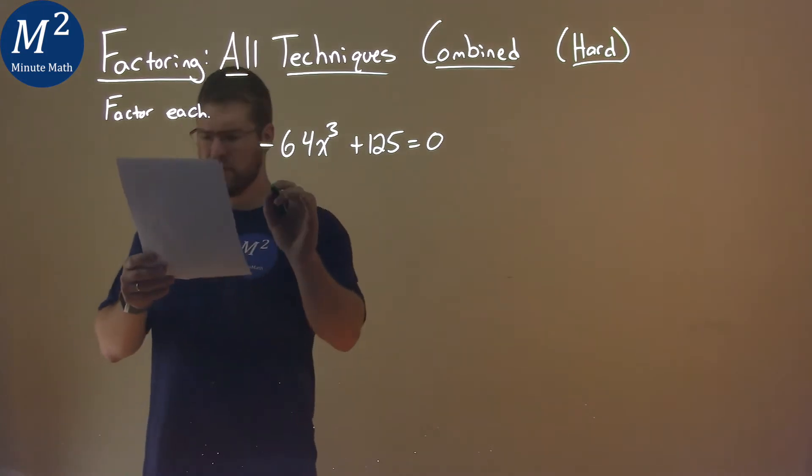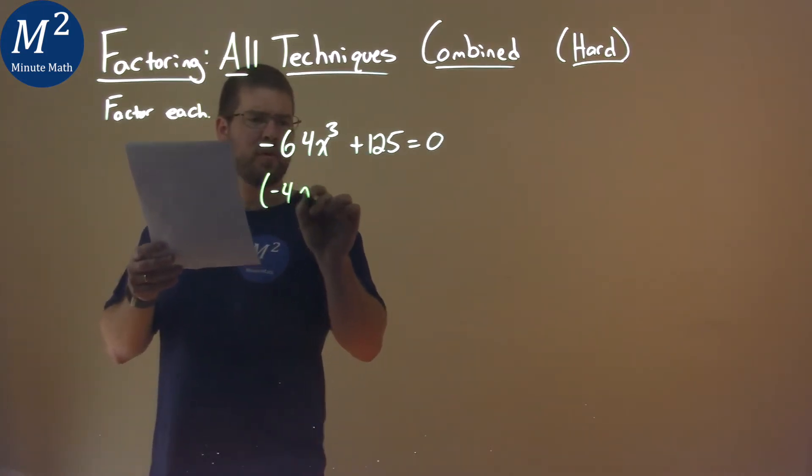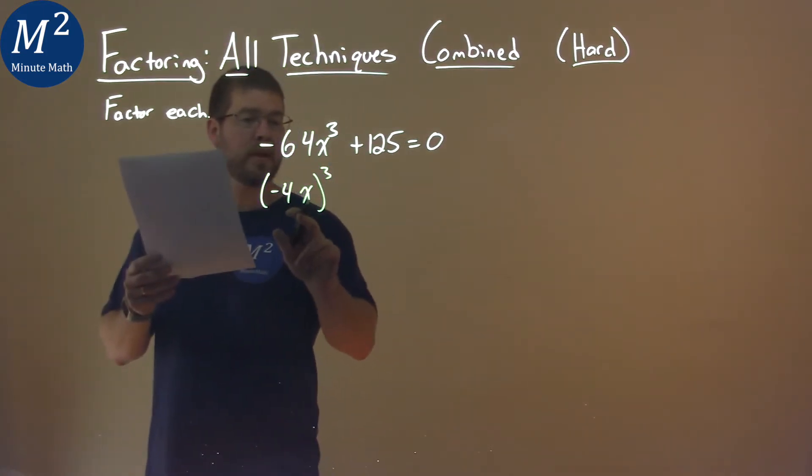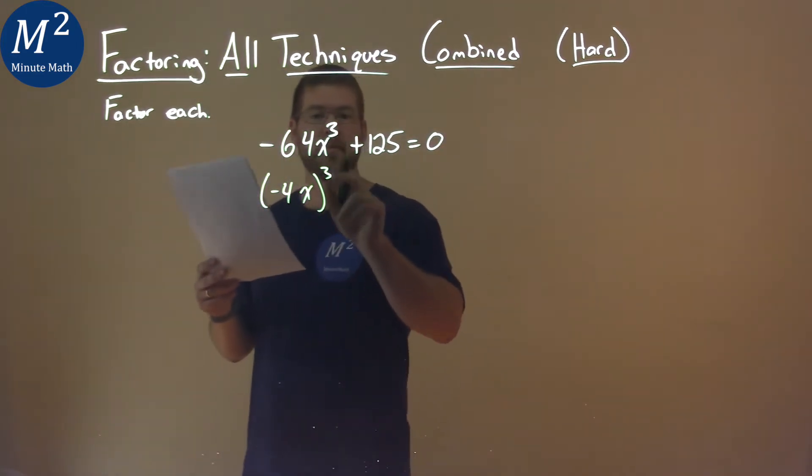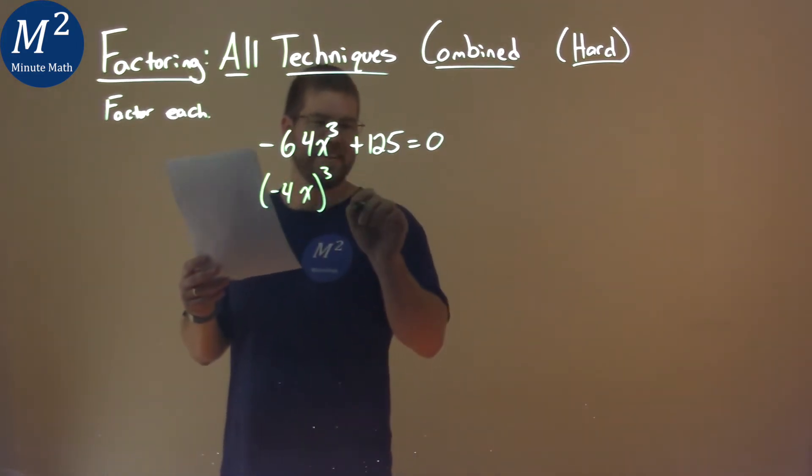We can rewrite this to be really a negative 4x all cubed. Negative 4 cubed is negative 64, x cubed is x cubed, plus 125 is 5 cubed.